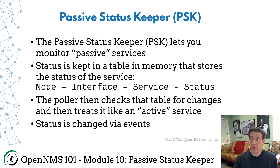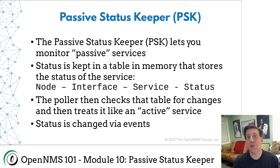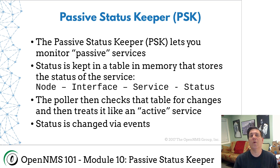And that's pretty much it. We have an event that can come in and set this event to change the status of any one of these particular services. The actual service check — the monitor — is quite simple. It just goes to memory and says, 'What's the status of this service?' If it's down, it generates all the node lost service events and things that we're used to. If it's up, nothing happens.